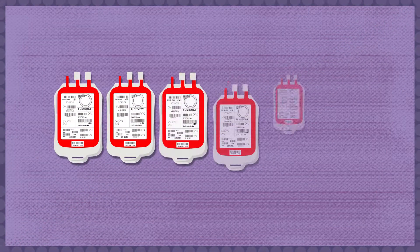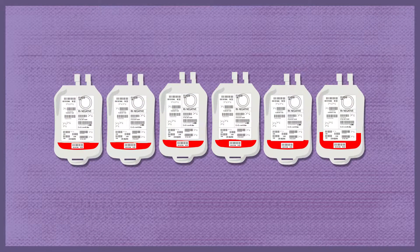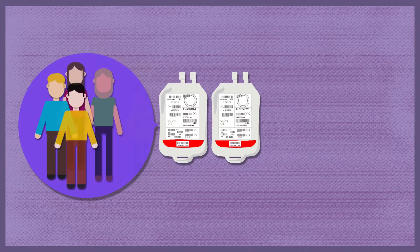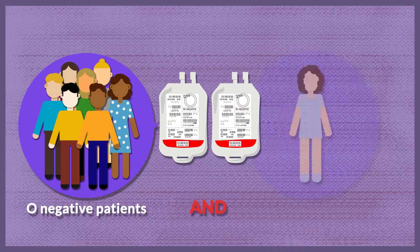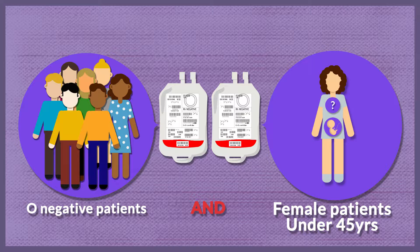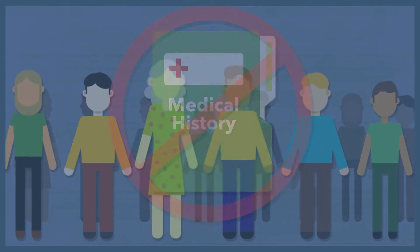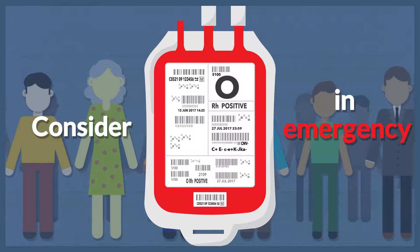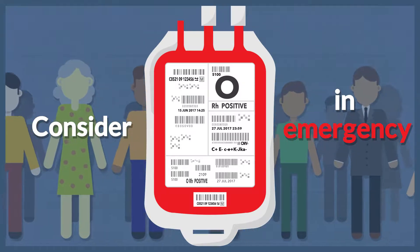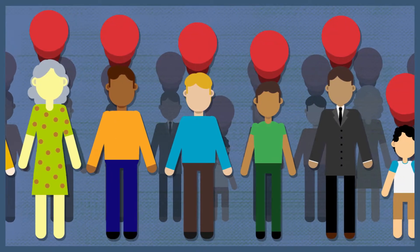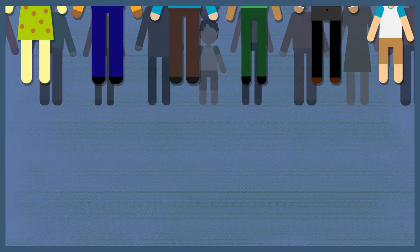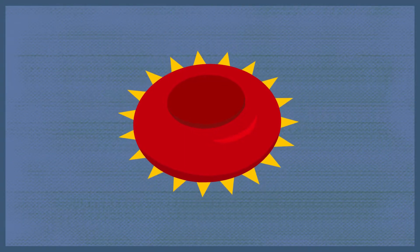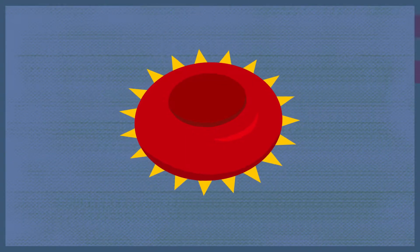Since O negative blood is in chronic short supply, its use should be restricted only to O negative patients and to women of child-bearing potential with an unknown blood group who require emergency transfusion. For all other patients with no documented history of an anti-D antibody, consider transfusing O positive red cells in a transfusion emergency until the specific blood group is known, as the majority of transfused patients will not form an anti-D antibody.